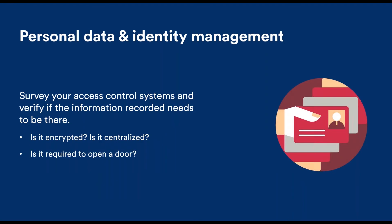Personal data and identity management is a very important component. Identity is the new perimeter in security, since perimeter defense is no longer valid. We need to validate the identity of every person and every machine, and use that as a foundation for all network interactions. Centralizing identity makes it much easier to protect — a single identity for all systems including video, access control, and license plate recognition. If someone requests to be forgotten, it's much easier to quickly remove their personal information when it's properly centralized.